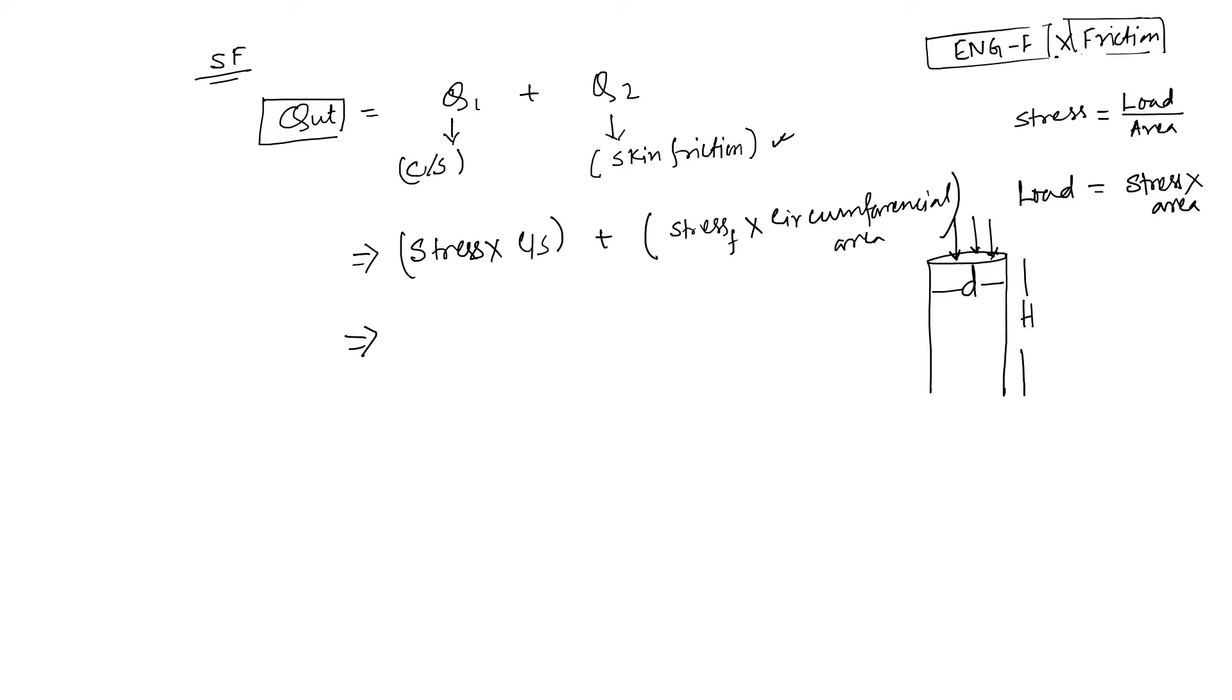Here I can write qf into pi by 4 d square. Here I can write skin friction, say qf into pi d h. So that is the formula of your Q ultimate. That is the main formula. But, but, but...